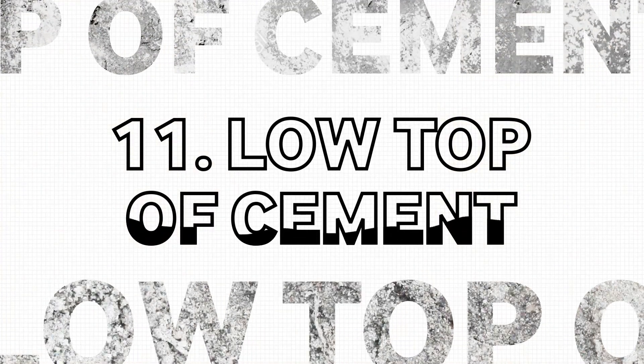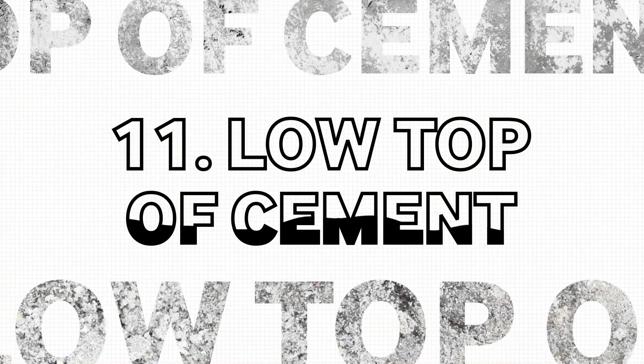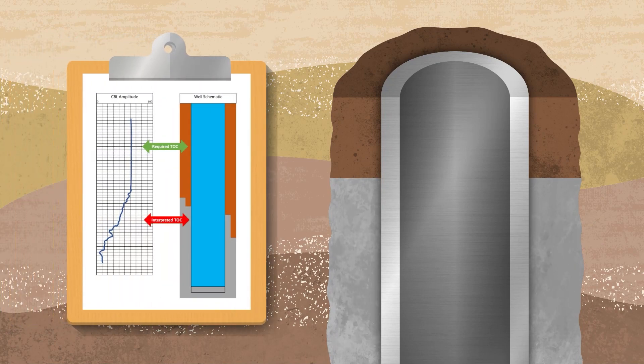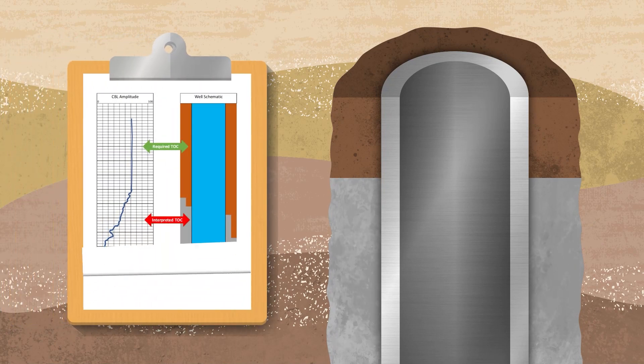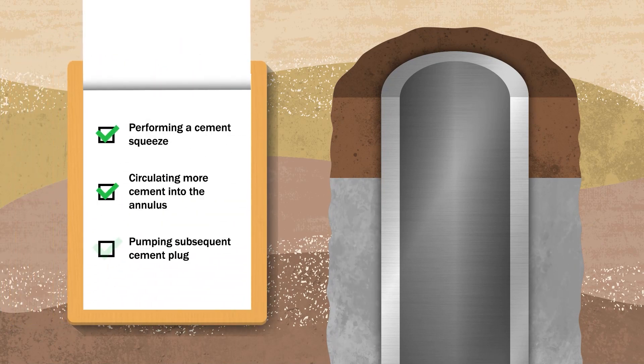Low top of cement is typically the result of other cementing problems such as lost circulation. A minimum volume of cement slurry should be determined and contingency plans should be developed in case the minimum volume is not met.